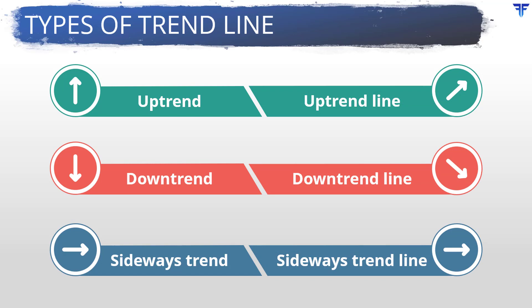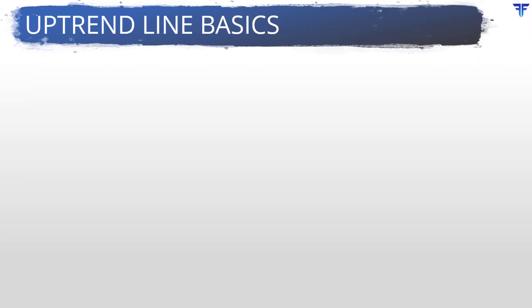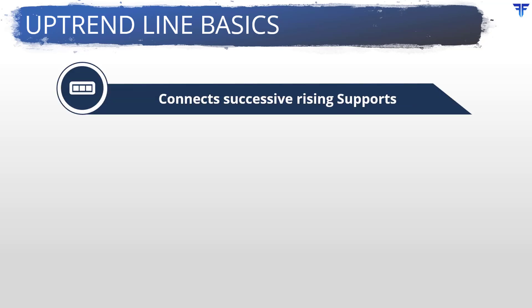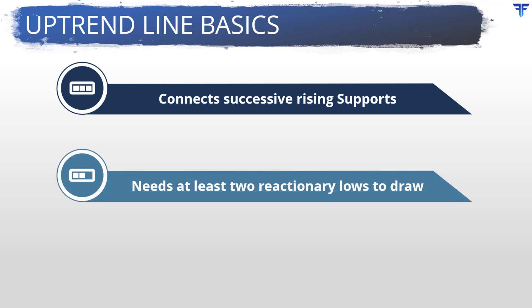Let us now talk about each of these in greater detail. An uptrendline is a straight line that connects successive rising supports. In order to draw an uptrendline, all you need to do is identify at least two successive reactionary lows, with the second low being above the first low, and then connect those lows using a trendline. This trendline must be extended into the future.